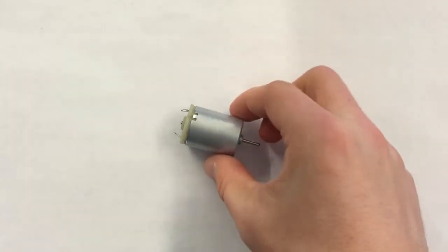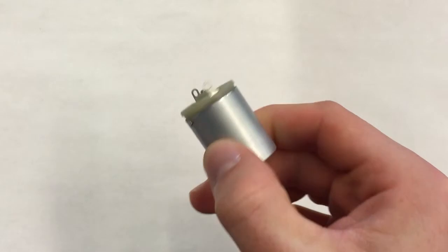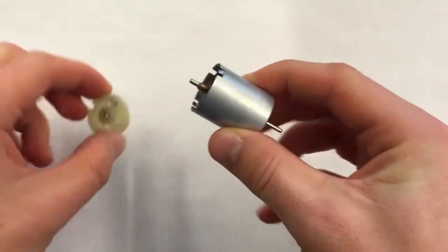To take it apart, all we had to do was flip up two small metal tabs with a screwdriver. When we did this, we could see the main parts of the motor.